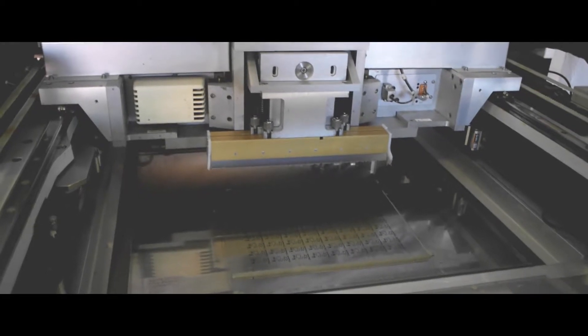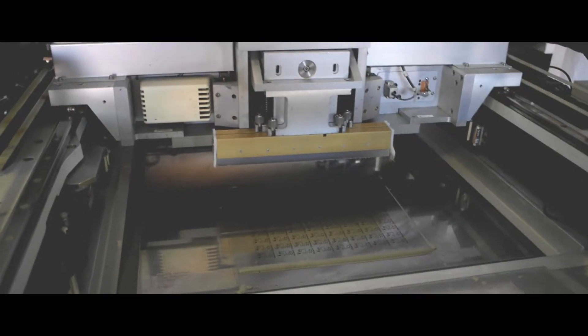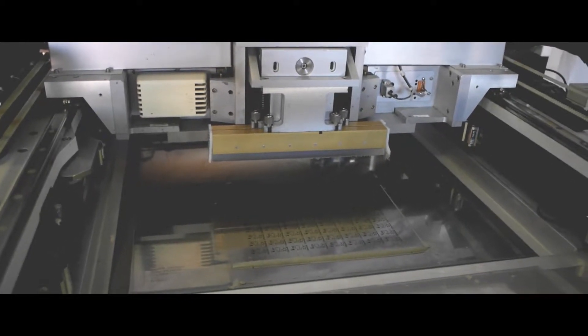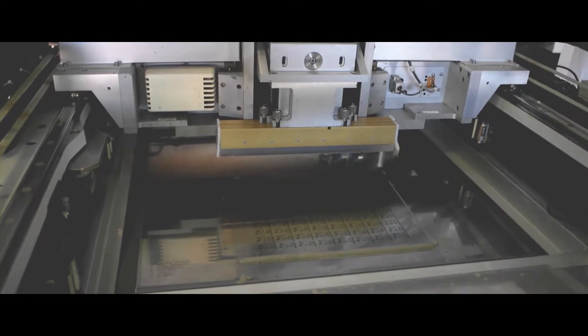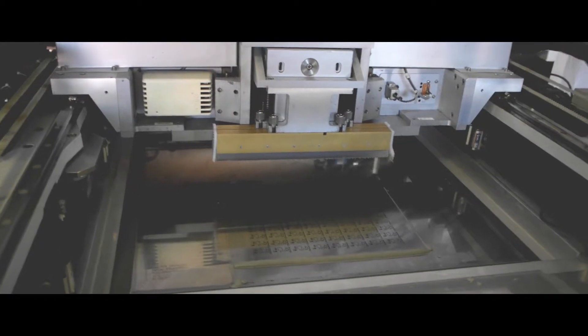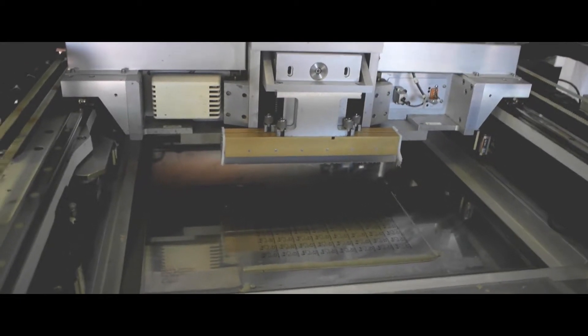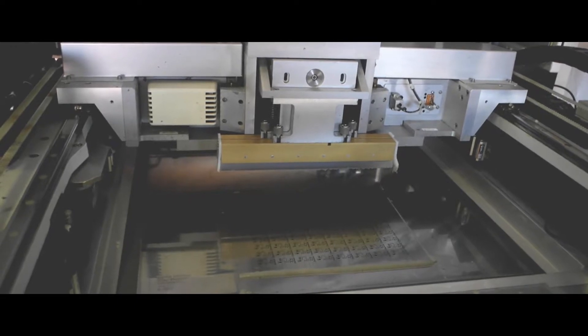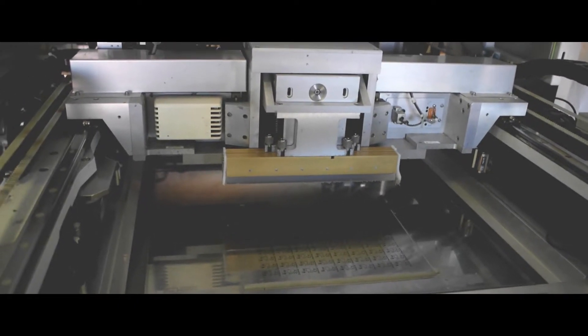The board will get loaded into this machine and it's a vision based machine. It's going to align what are known as fiducials on the board to fiducials on the screen. Aligning those, this machine can align to within 25 microns. Then it'll lift the board up, squeegee on a layer of paste and we'll do that now.